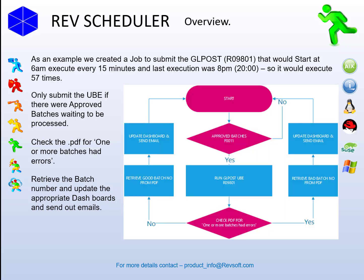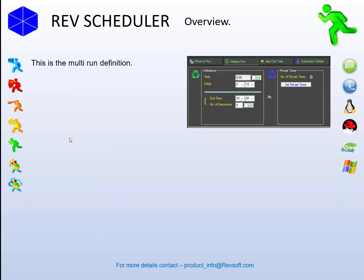Here's the flowchart. Basically, check and see if there are any approved batches. If no, go back and wait for the next process. If there are, run the GL post UBE, read the PDF and see if there are any errors. If there are, go through the error processing. If there aren't, go through the good processing. This is what the multi-run part of the definition looks like in RevScheduler: start at 6am, every 15 minutes, end at 8pm.